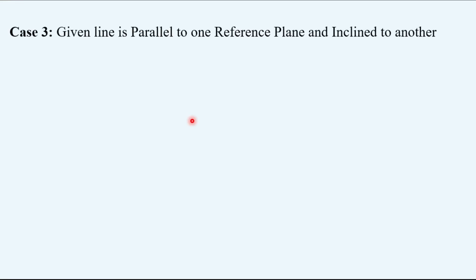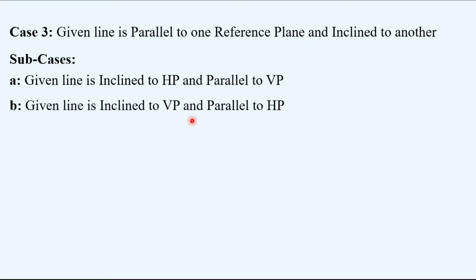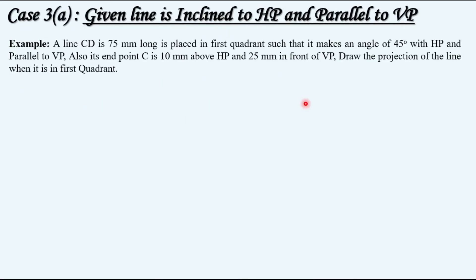Coming to case number three: when the given line is parallel to one reference plane and inclined to another. Similar to case number two, it also has two sub-cases. A: when the given line is inclined to HP and parallel to VP, or sub-case B: when the given line is inclined to VP and parallel to HP. In this video we will look at sub-case A of case number three. Let us take an example for better understanding.